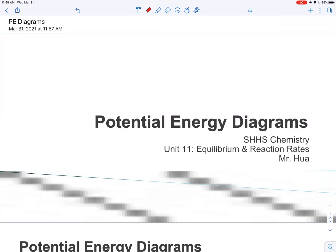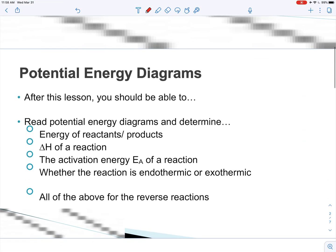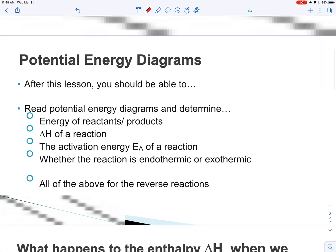Today we are continuing our unit 11 and we're going to talk about potential energy diagrams. After this lesson you should be able to read a potential energy diagram and determine the energy of the reactants and products, the delta H (the heat of the reaction), the activation energy of the reaction, whether or not it's endothermic or exothermic, and all of the above for the reverse reactions.